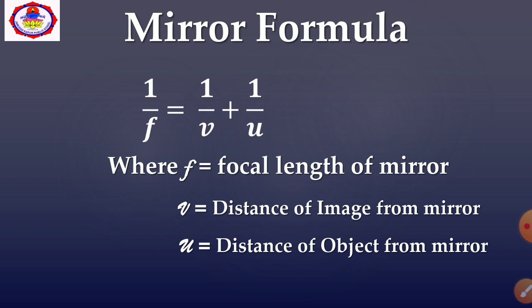The formula shown on the screen is 1/F = 1/V + 1/U, where F is the focal length of the mirror, V is the distance of the image from the mirror, and U is the distance of the object from the mirror.